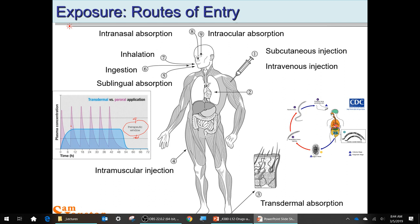The transdermal patch is engineered to dose through the skin into the bloodstream to keep it at the therapeutic level — constant dosing. But certain things can change the transdermal pathway. If your skin is roughed up before you put the patch on, the dose will go above the therapeutic window because the patch is designed for good, healthy skin with a nice layer of fat and dead skin cells.